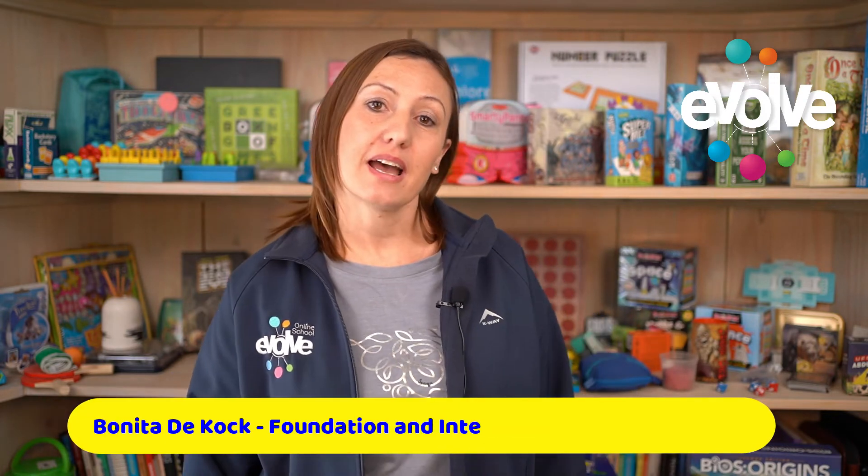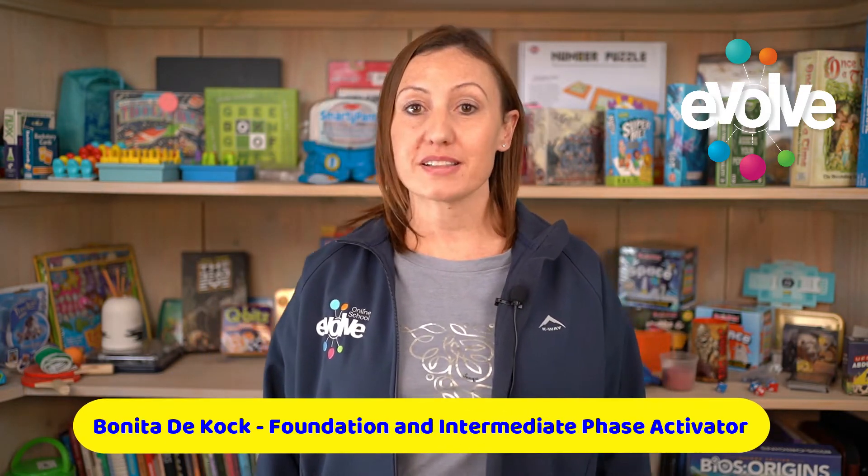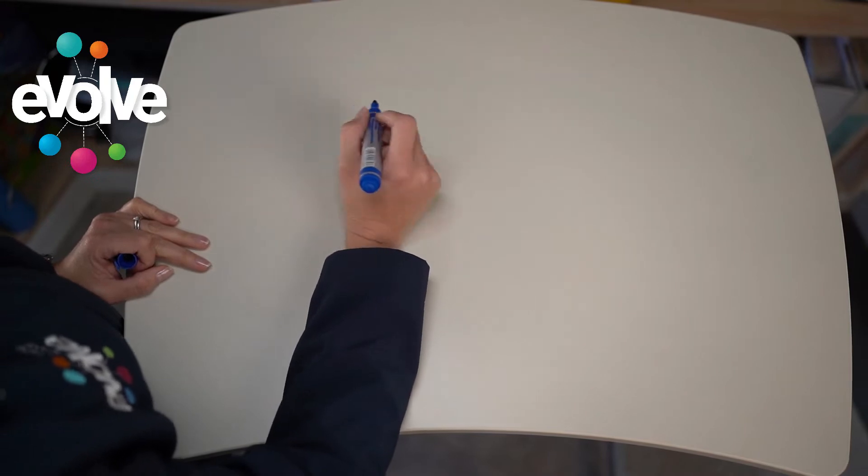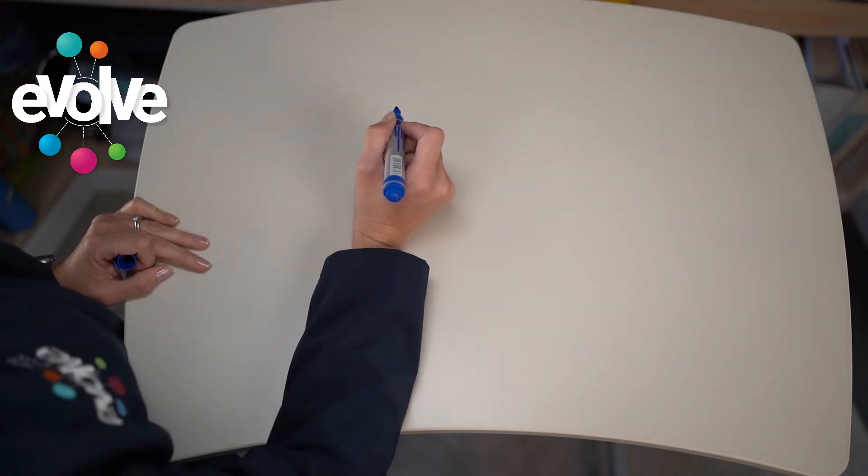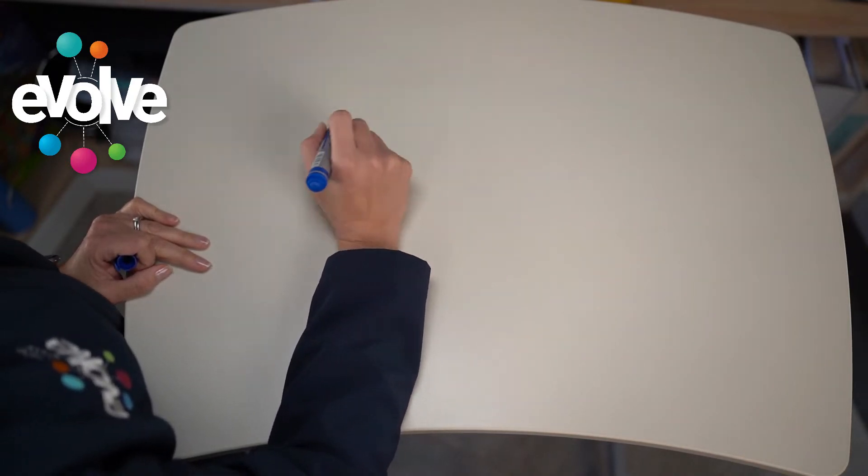Hi, my name is Bonita and I'm the level 4 and 5 Maths Activator at Evolve. Today I'm going to share with you my Evolve Online Learning Act. Today I'll be showing you a shortcut on how to subtract a three digit number from 1000.